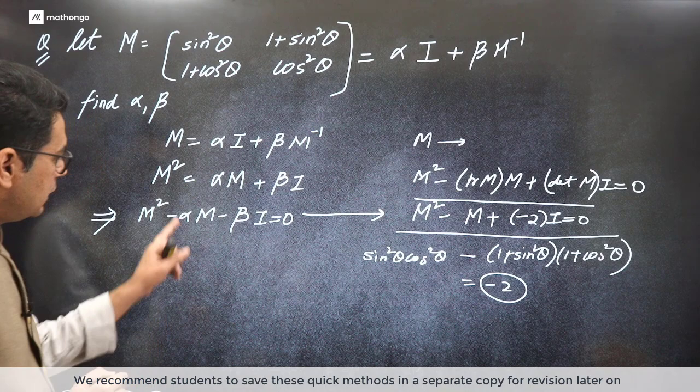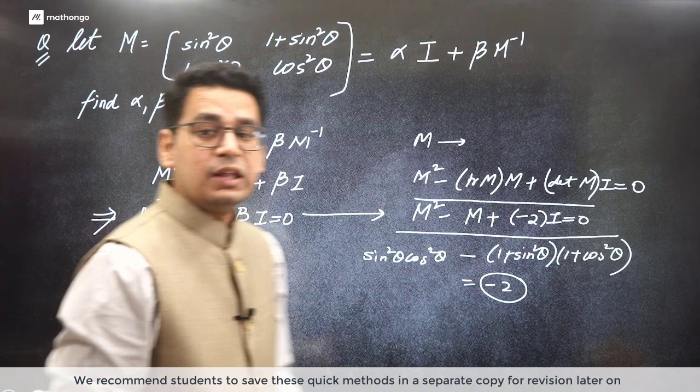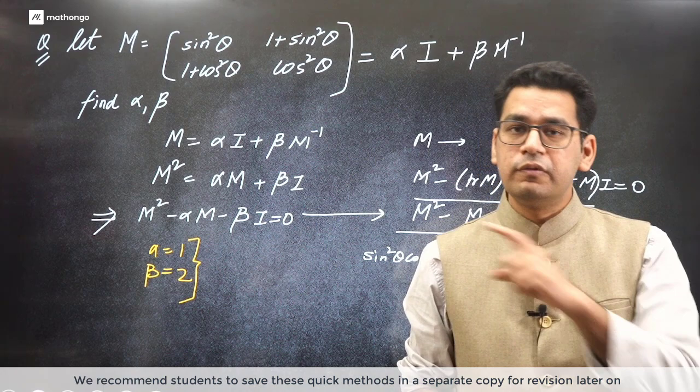Now this is a quadratic in M and this is also a quadratic in M. So that means they both should be equal and now you can easily find the value of alpha. What is alpha? Just compare: 1. What is beta? Beta was minus beta and here is minus 2. Alpha comes out to be 1, beta comes out to be 2. And this is how quickly you can solve using the process of characteristic equation. It will be solved very quickly.